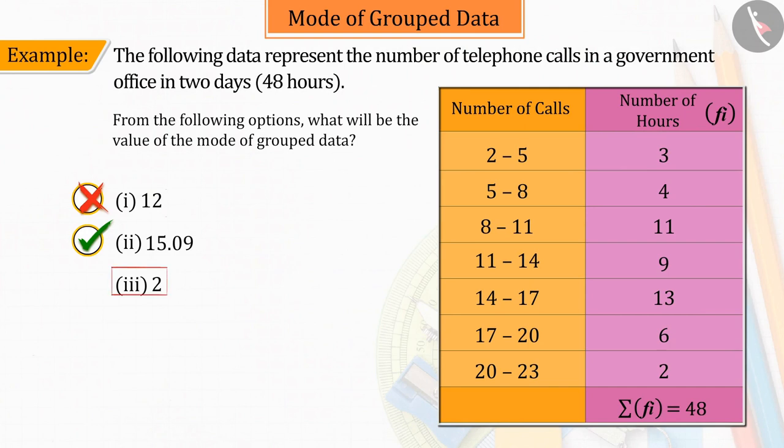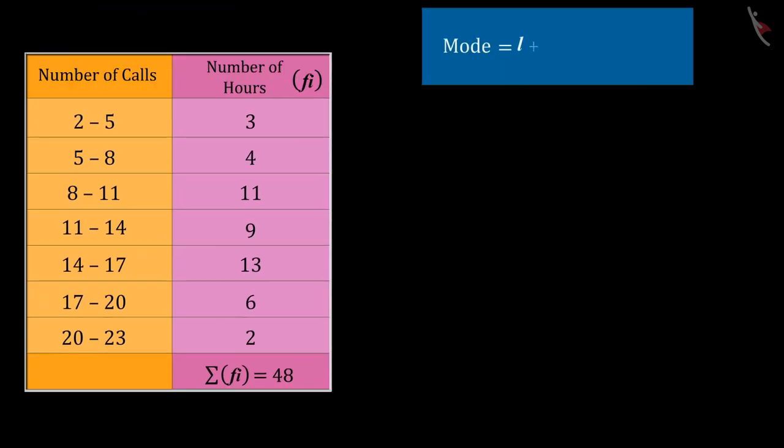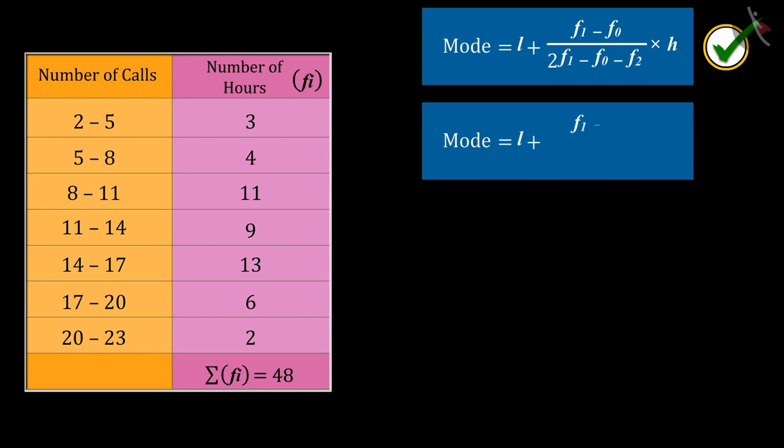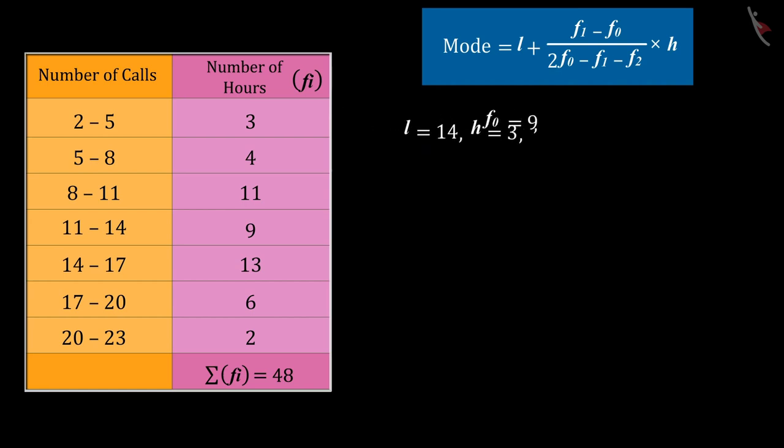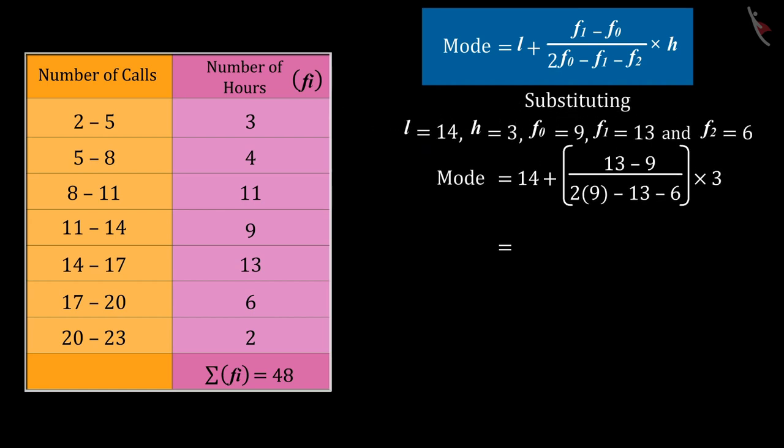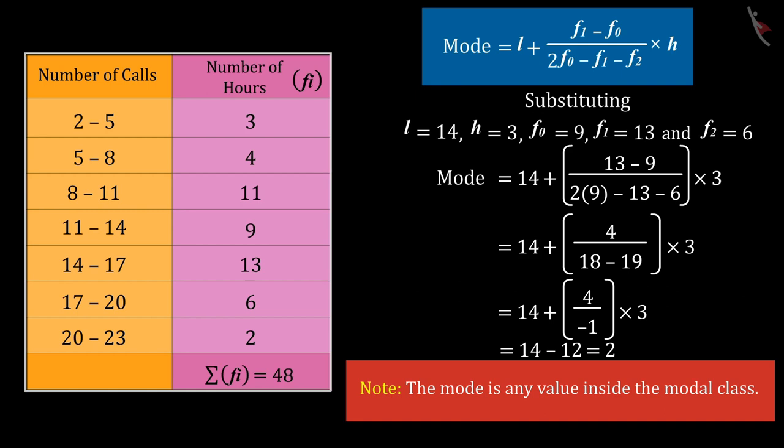If you have selected option 3, then it is also a good try. But this is the wrong answer. Because, in the modal formula, instead of L plus F1 minus F0 upon 2 times F1 minus F0 minus F2 multiplied by H, and solve on the same basis, which, upon being solved, gives the value of mode as 2, which is an incorrect answer. Because, the value of mode is any value inside the modal class.